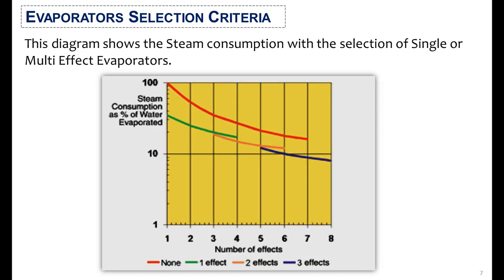This diagram shows steam consumption with the selection of single or multi-effect evaporators. With a single effect evaporator, steam consumption is very high to remove water from the product. As the number of stages increases, steam consumption reduces. In a three-effect evaporator, steam consumption reduces by up to 50%, because the process vapors of the first stage are utilized as heating media in the second stage, and similarly for the third stage.